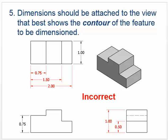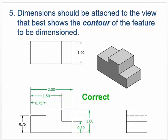Dimensions should be attached to the view that best shows the contour of the feature to be dimensioned. Basically, most dimensions should go on the front view. We have contours and different shapes there, whereas from the top we just see a rectangle — we don't get a good idea of what the object really looks like. This is the correct way to do it; notice they put it on the bottom of the front view.